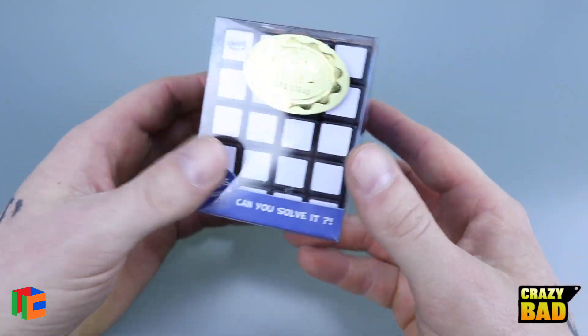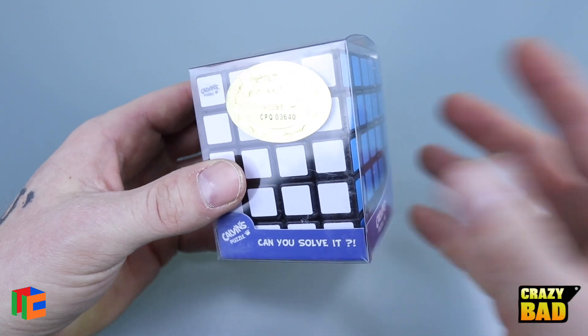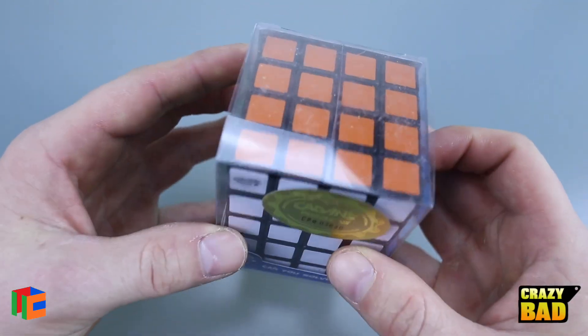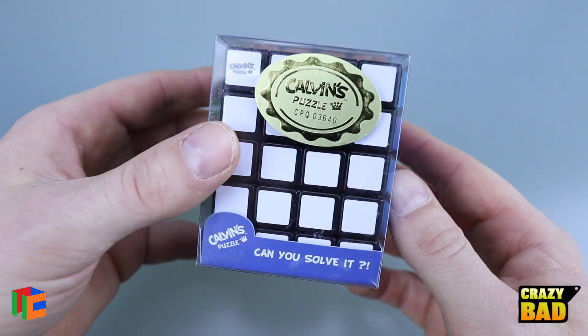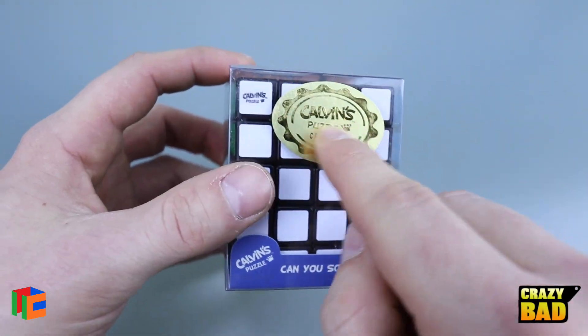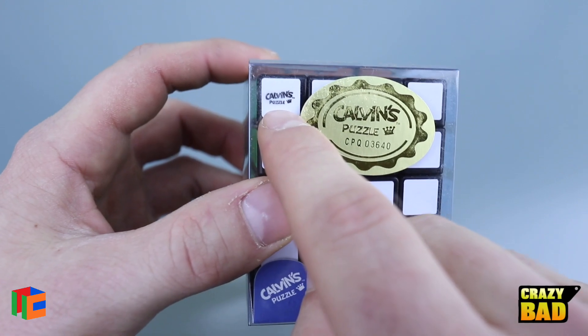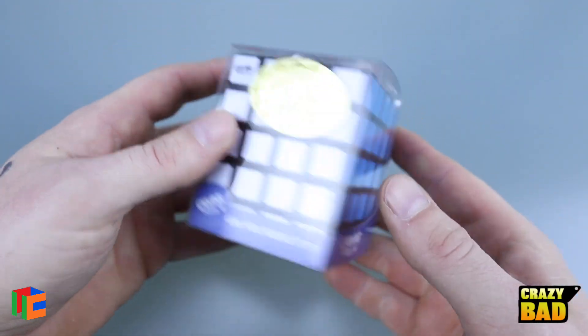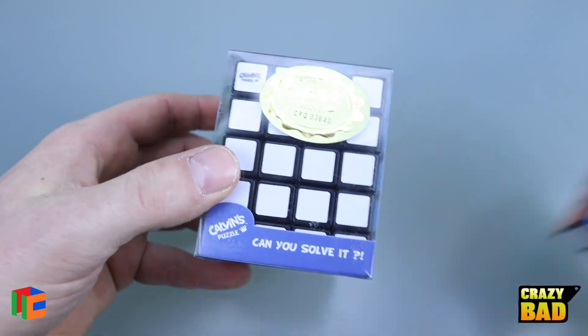Then all of a sudden four years later I'm seeing pictures of it, so I guess he did and he sent me a bunch of the copies. Now this is what you would get if you bought it in the actual store. It comes in a nice clear box, it's got the Calvin's logo, Calvin's puzzle logo there, and then my Crazy Bad logo is actually down in there.